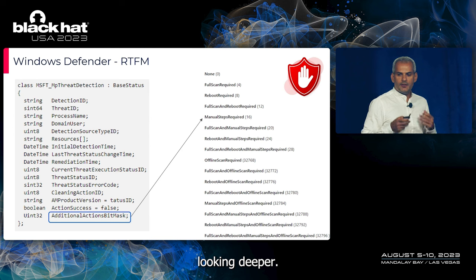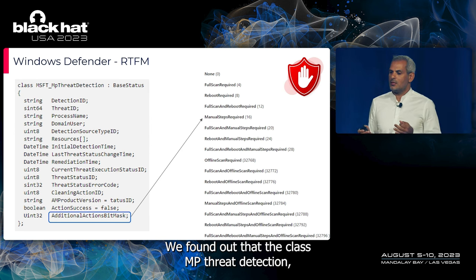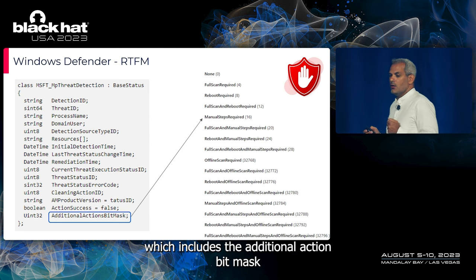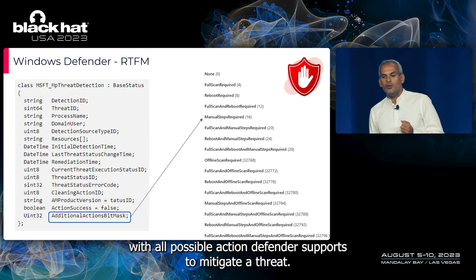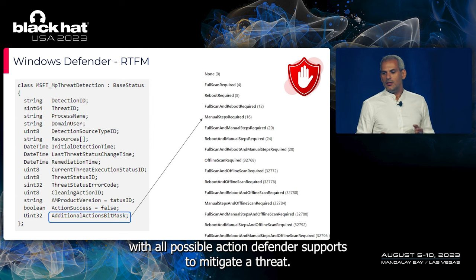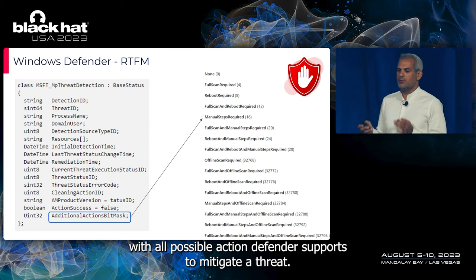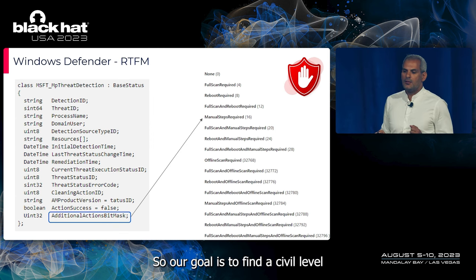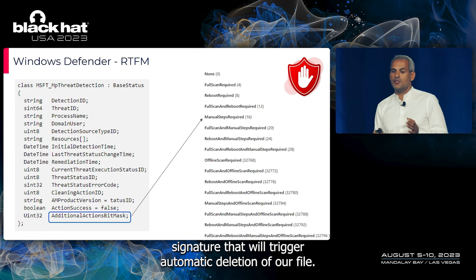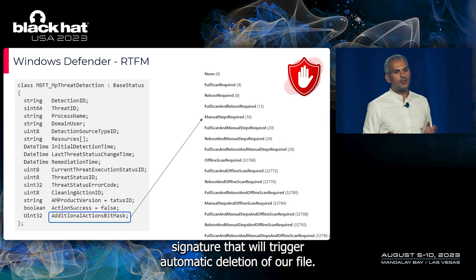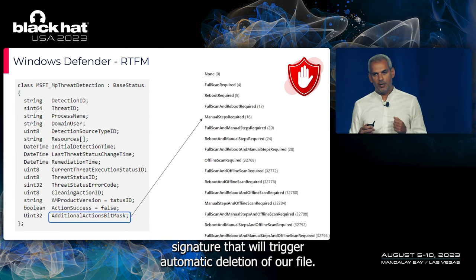Looking deeper, we found the class MP threat detection, which includes an additional action bitmask with all possible actions Defender supports to mitigate a threat. Our goal is to find a severe-level signature that will trigger automatic deletion of our file.